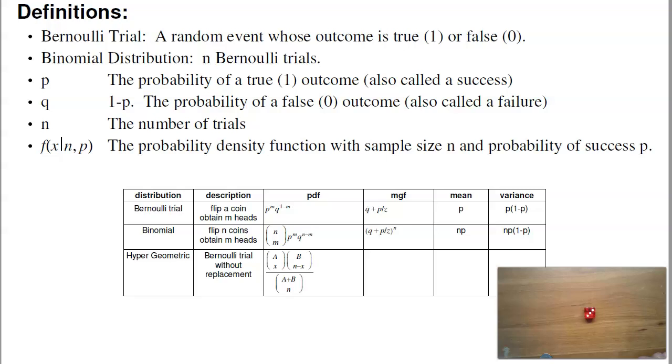A binomial distribution is n Bernoulli trials. If I take 3 coins and flip them, here I've got 3 successes, 3 heads. Or if I take 6 dice, roll them, and then 6 success any time I roll a 1. I've got 1 success, 5 failures. That's the binomial distribution.